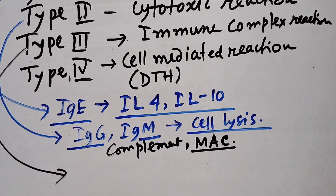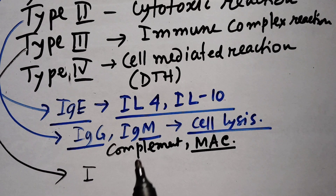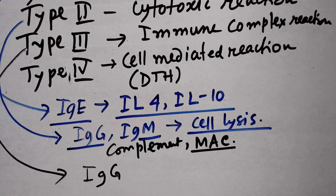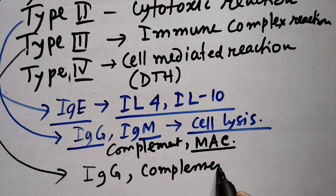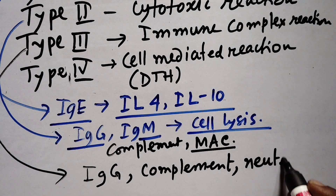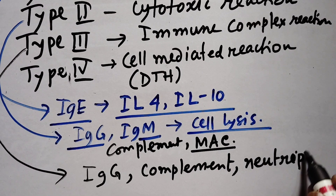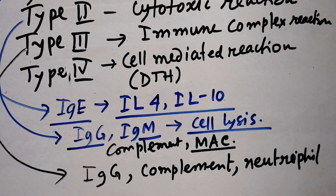Type 3 is mediated by IgG. IgG activates the complement system. This involves serum proteins and neutrophils. Neutrophils and macrophages are recruited. These are white blood cells involved in the immune complex reaction.